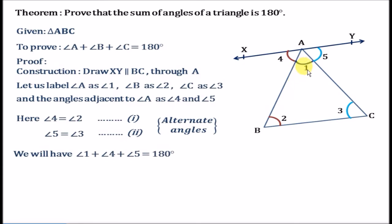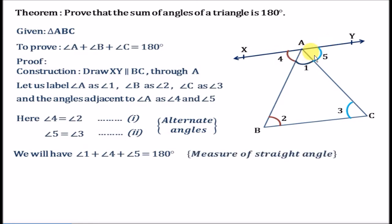Further, the sum of angle 1, angle 4 and angle 5 equals 180 degrees, because the sum of these three angles forms a straight angle and the measure of a straight angle is 180 degrees.